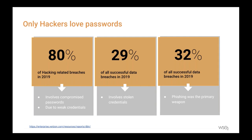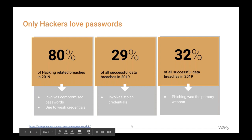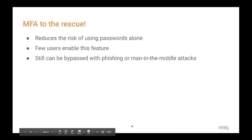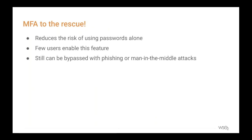And for 32% of all successful data breaches, phishing has been the primary weapon. So then came multi-factor authentication and adaptive authentication to the rescue. However, very few users enable these features, mostly owing to the lack of knowledge or the number of steps and complexity involved. And there are still cases where attackers have bypassed multi-factor authentication via phishing and man-in-the-middle attacks. Although these security measures have reduced the risk of using passwords alone, passwords still remain the weak link.